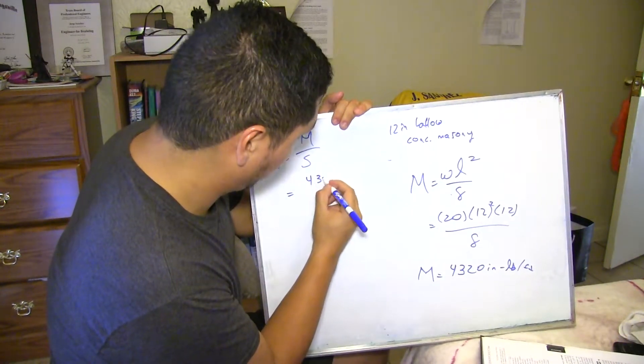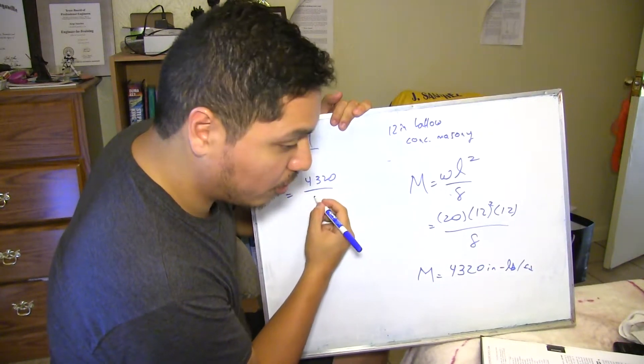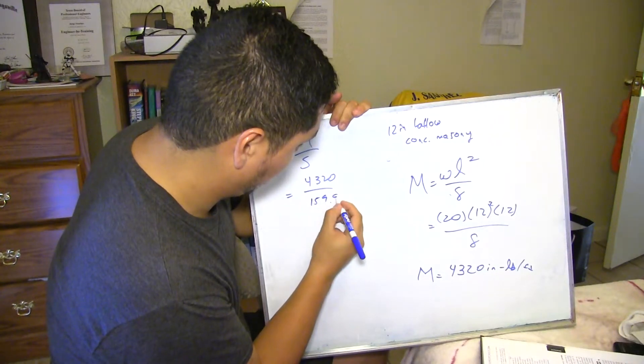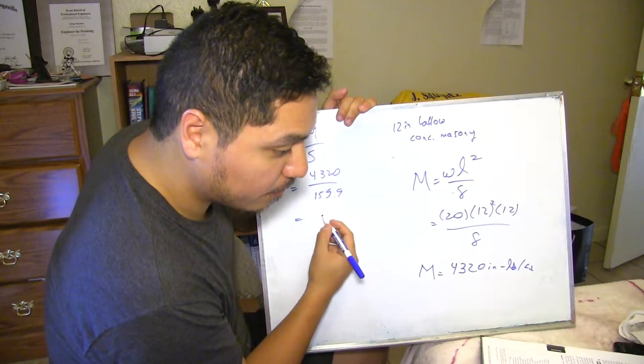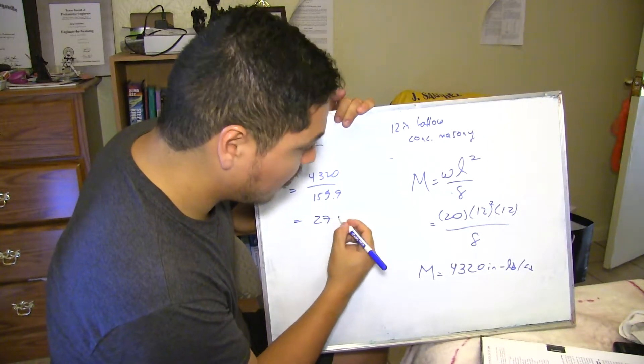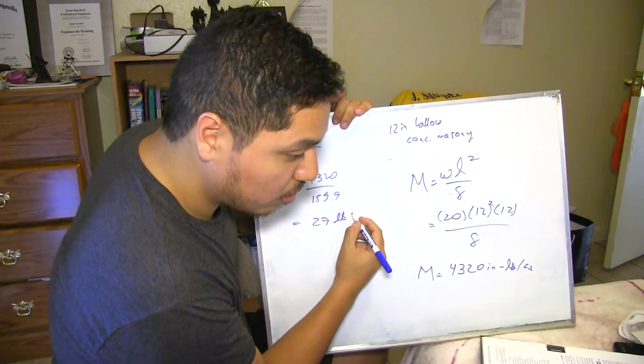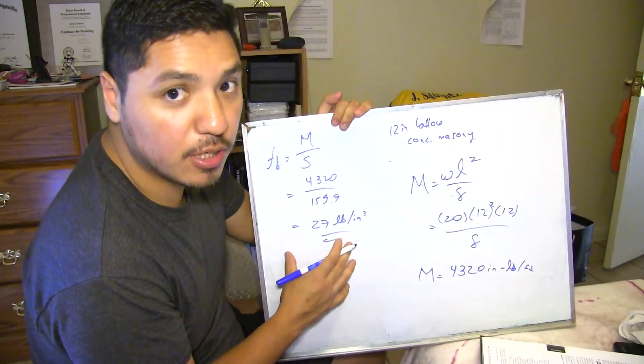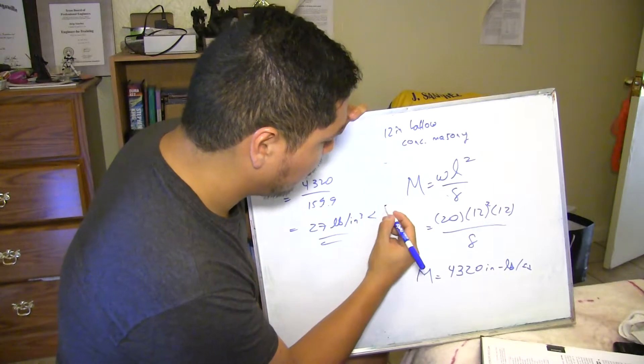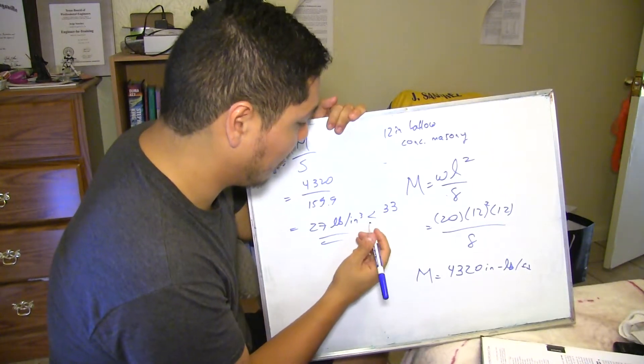So basically it's going to be this value, 4,320 over 159.9 that we got from the table. And this will give us 27 pounds over an inch squared. So basically, this is the actual load that you have on the masonry column, and this is lower than the 33 that the wall can take.